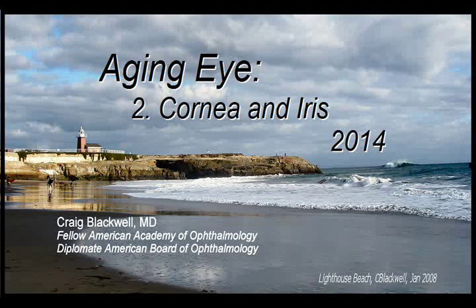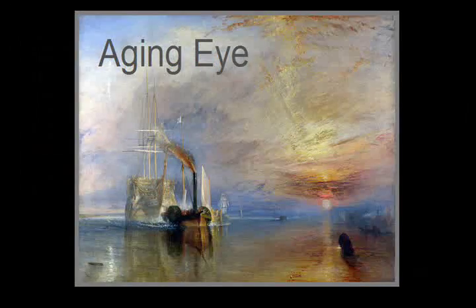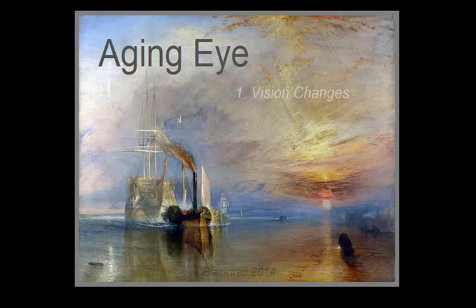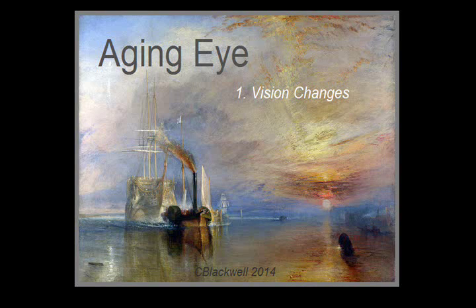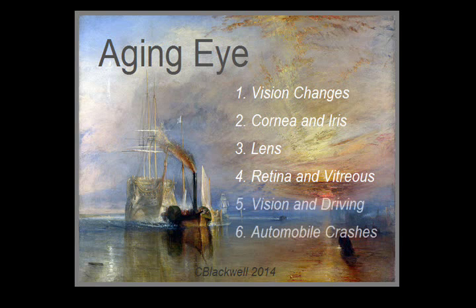In this series, we are exploring what happens to the eye and vision as we age. In the first video, we looked in some detail at how vision decreases in sharpness and other dimensions, like ability to detect contrast and reduced dark adaptation. With this video, we move on to structural changes that affect vision. In the last videos, we will discuss vision and driving.